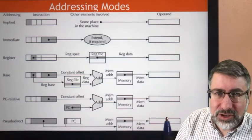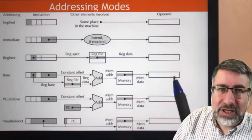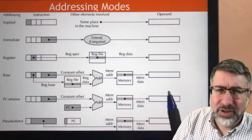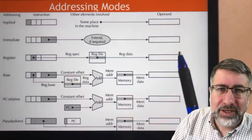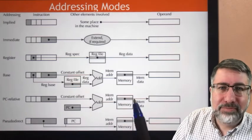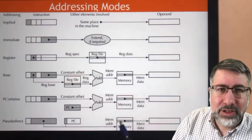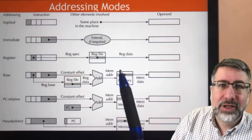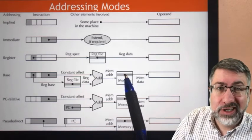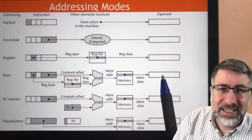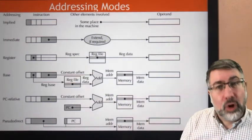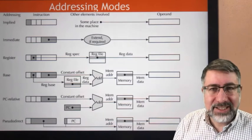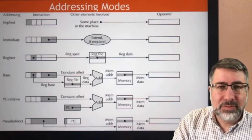So here for these two, the operand is memory. For these, the operand is data. For these, the operand is the next instruction or the program counter. Here the operand is just data. In both of these cases, we look up the new instruction in instruction memory. In this case, we look up the new value in data memory. But in all of these cases, these are the six and only six ways that we can get access to information using our MIPS computer.